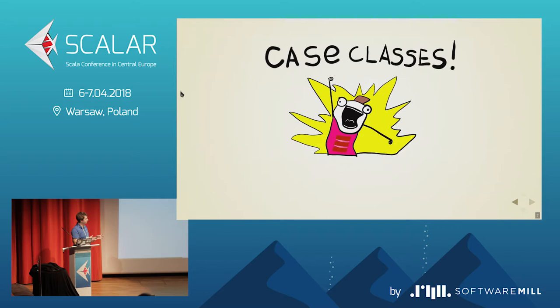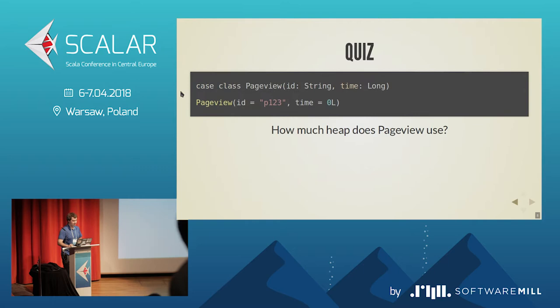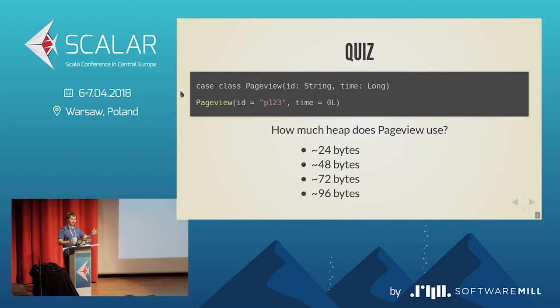Usually the story of data modeling starts with case classes. A short example: we have a PageView, which is just a simple case class with an ID — some string ID — and a time, which is a timestamp, a long. And a short quiz: we have an instance of this case class — like a PageView — and how much precious RAM does it use?